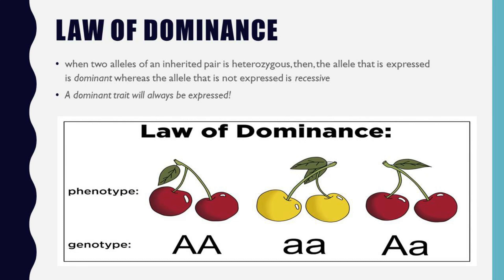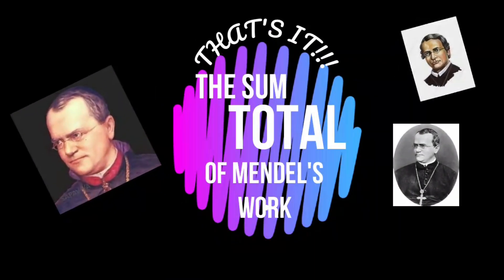The last law is the law of dominance. It simply states that when the two alleles of an inherited pair are heterozygous, the allele that is expressed is dominant, whereas the allele that is not expressed is recessive. A dominant trait will always be expressed — if an allele is dominant, it will always be expressed no matter what. For instance, if one allele codes for tallness and the other codes for shortness, when a tall person and a short person have children, most or all of the children will come out tall because of the law of dominance.